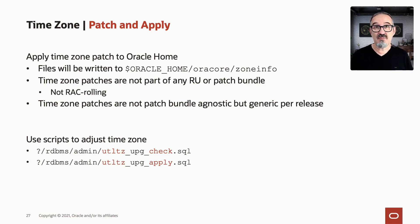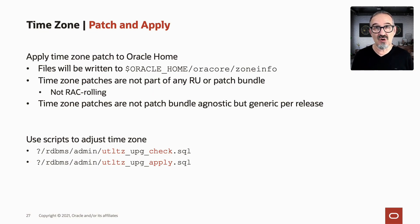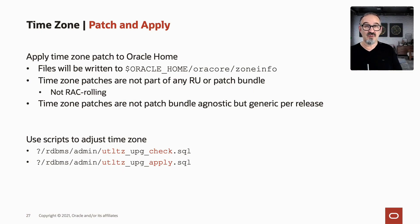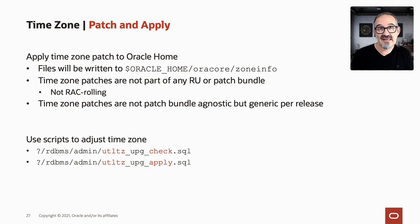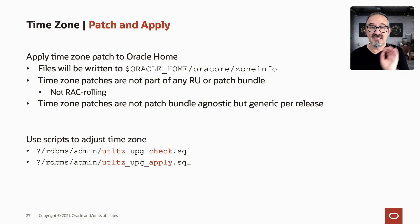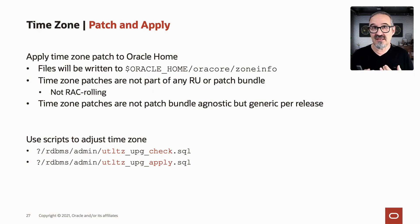Time zone patches are not patch-bundle agnostic. That means you always download the time zone patch with the base patch number — for instance, 19000, 18000, or 12201 — not a time zone patch on top of a specific RU like 19.8. One time zone patch for 19c fits all 19c release updates. If you find artifacts on MOS with a specific patch for 19.7.0 or similar, ignore that. Always take the one applicable to all RUs, like 19.0.0.0.